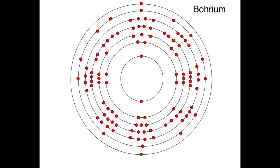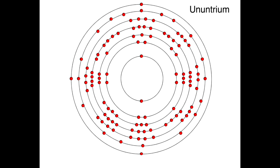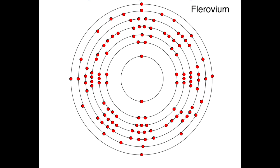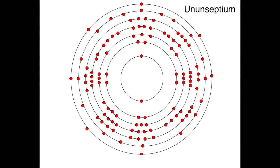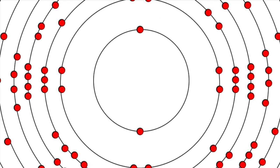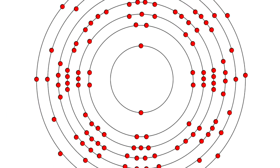Rutherfordium, dubnium, seaborgium, bohrium, hassium, meitnerium, darmstadtium, roentgenium, copernicium, ununtrium, flerovium, ununpentium, livermorium, ununseptium, ununoctium. And then we're done.